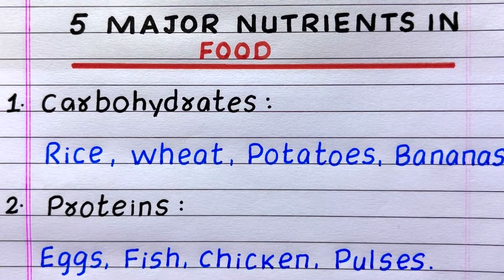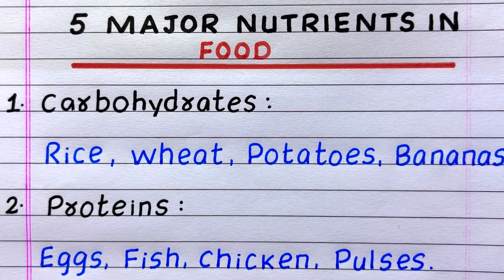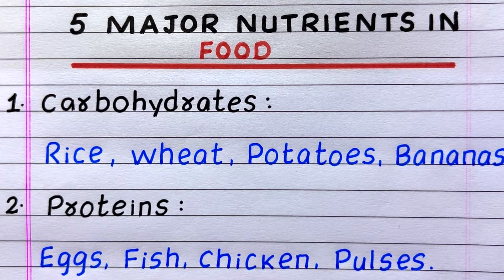The first major nutrient in our food is carbohydrates. Sources of carbohydrates are rice, wheat, potatoes, and bananas. The second major nutrient is proteins. Sources of proteins are eggs, fish, chicken, and pulses.